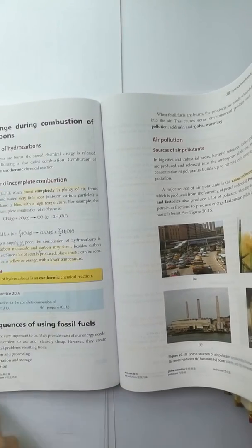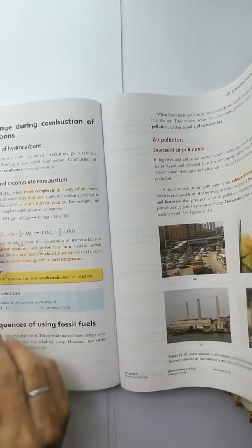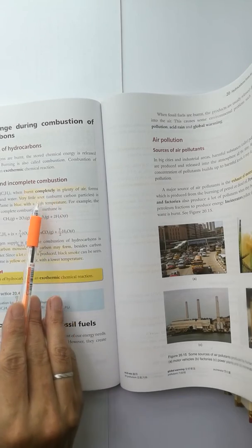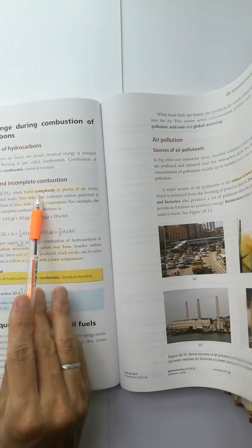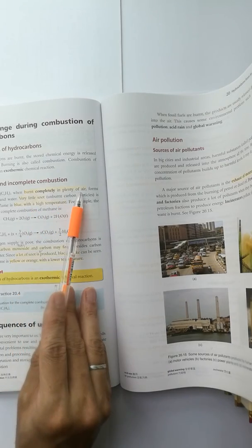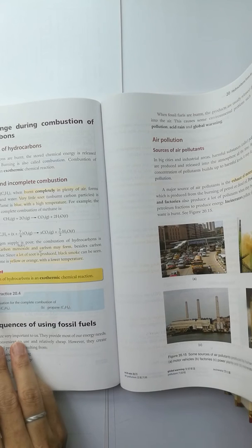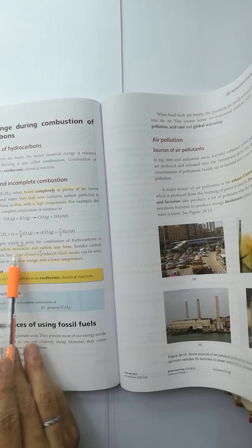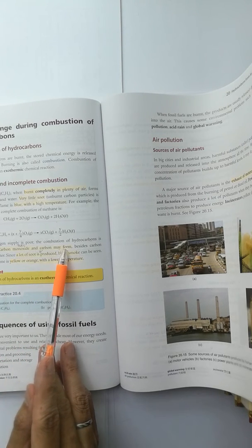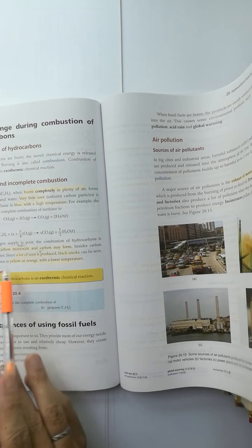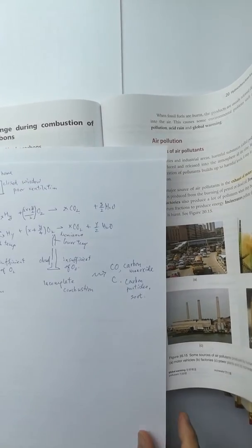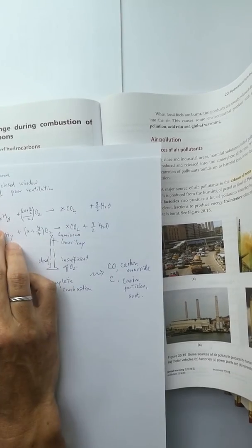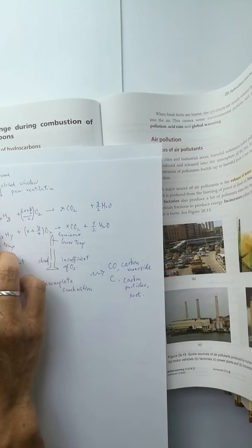We have complete combustion when the supply of oxygen is high, and we have another type called incomplete combustion when the oxygen supply is poor and carbon monoxide and carbon may form. Usually they have a yellow and orange flame color.